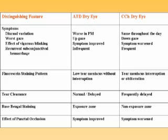Fluorescein staining, if positive, showing superficial punctate keratopathy, tends to be located in the interpalpebral exposure zone in conventional dry eye. Yet this pattern would change to include the non-exposure zone in chalasis-induced dry eye. This pattern can be helpful, and I will demonstrate it to you later.